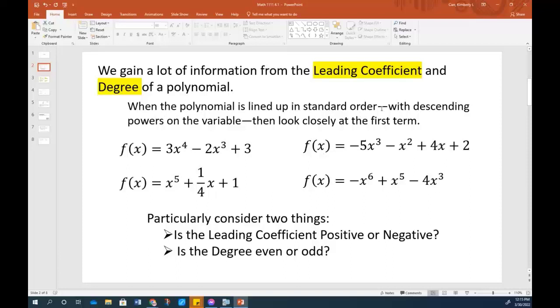When the polynomials are lined up in standard order, and standard order means that the powers are going down, then you want to look at the first term. So here we have 4, 3, and 1. So all of these four examples are lined up in standard order, and the powers are going down. So what we're going to do is consider two things. Is the leading coefficient positive or negative? The leading coefficient is your big number that's in front of your term with the highest power. And then is the degree on that particular term even or odd?